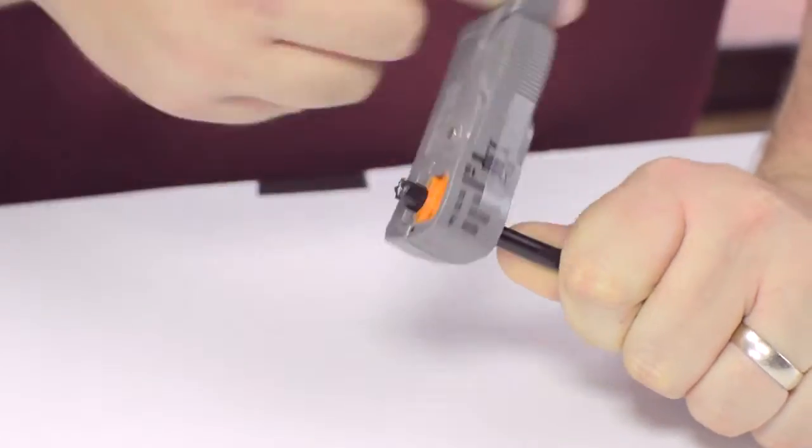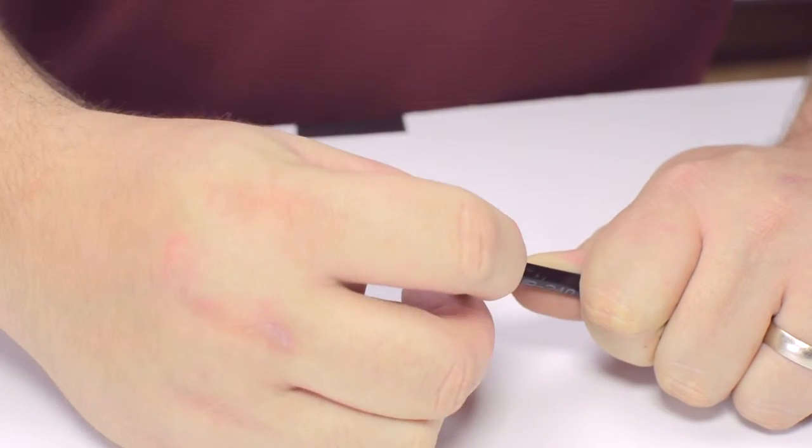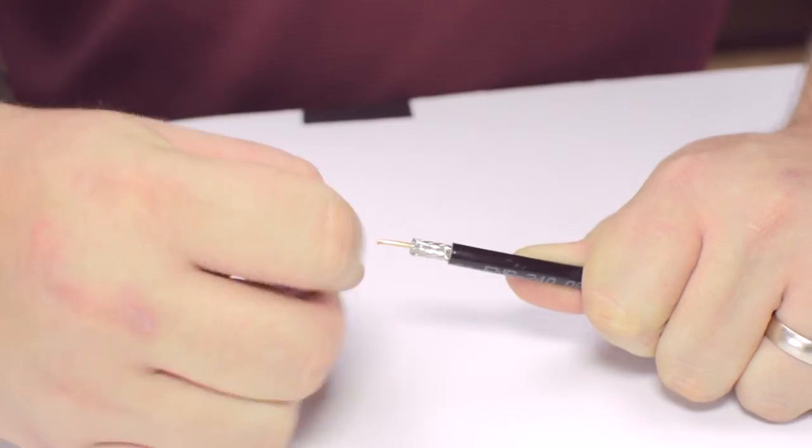Using your cable stripper, strip back the outer jacket and dielectric. The advantage of using a cable stripper is that it will strip back the jacket and dielectric at the same time.